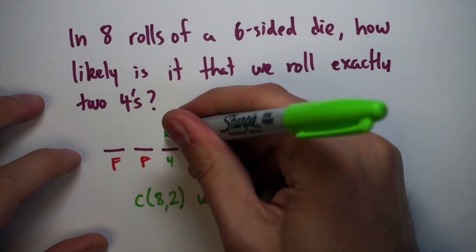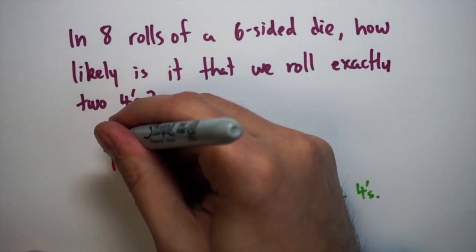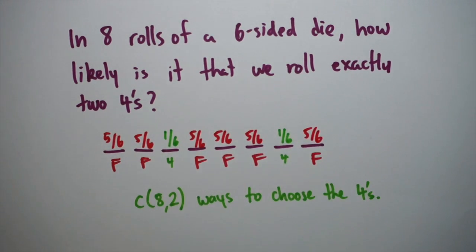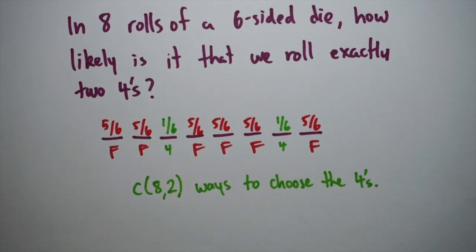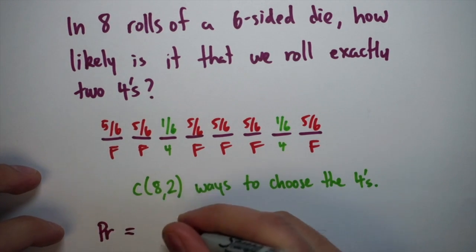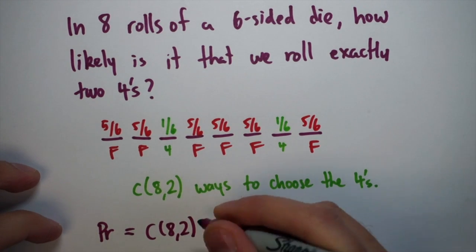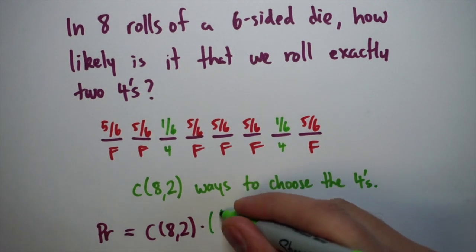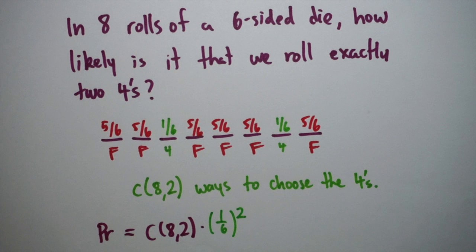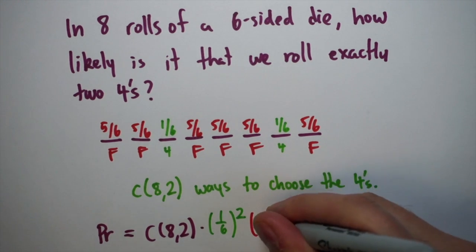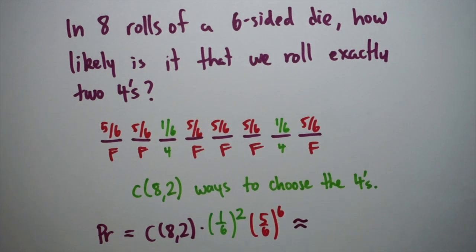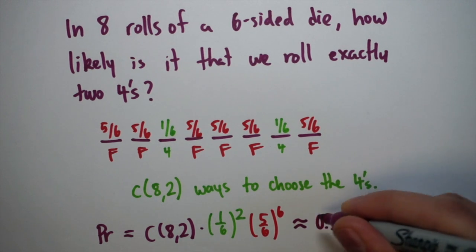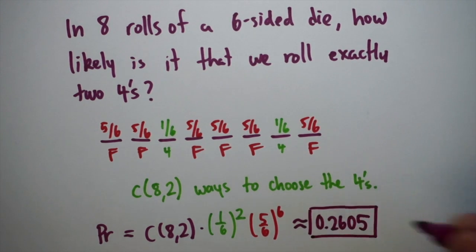Once we know where the fours are, the rest will be failures. Each four has a one-in-six probability and each failure has a five-in-six probability. Using the multiplication principle, the probability of exactly two fours is C(8,2) times (1/6) squared times (5/6) to the sixth power — because there are six failures. Multiplying these out gives a decimal of about 0.2605, roughly a 26% chance.